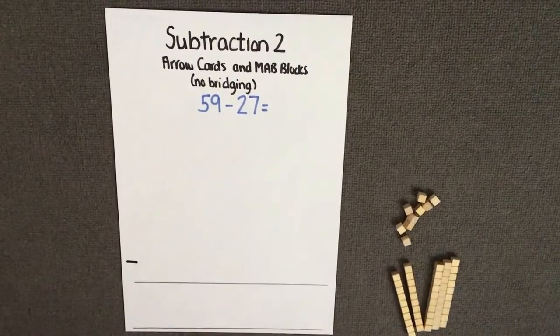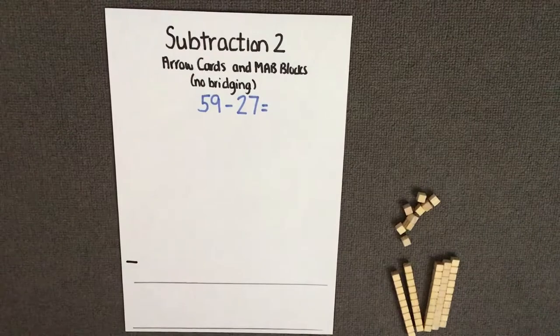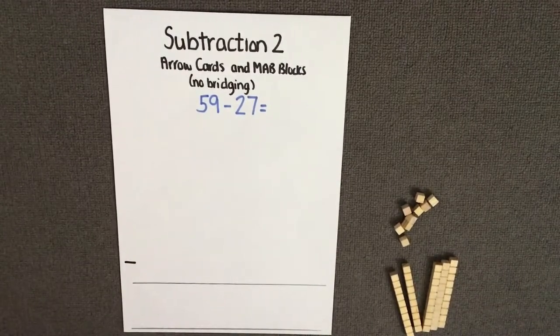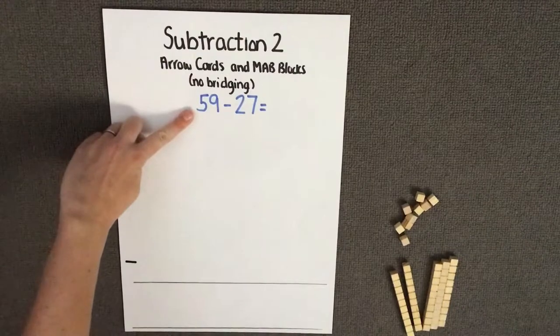Today we are learning about subtraction. I'm going to teach you how to use the arrow cards and MAB blocks strategy without bridging. Let's start by reading the question: 59 take away 27 equals.